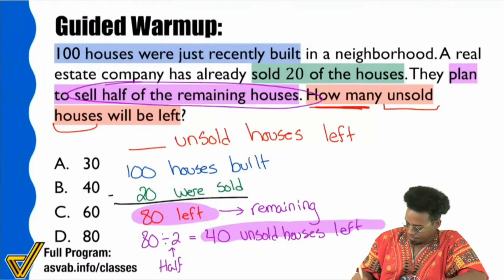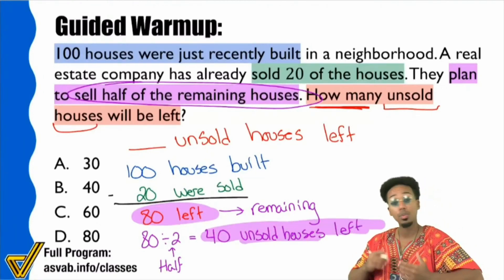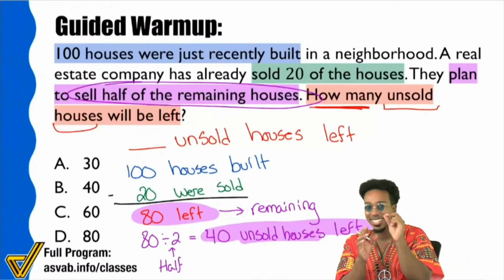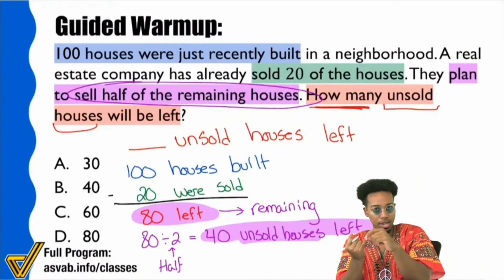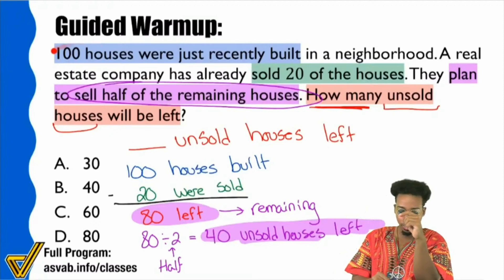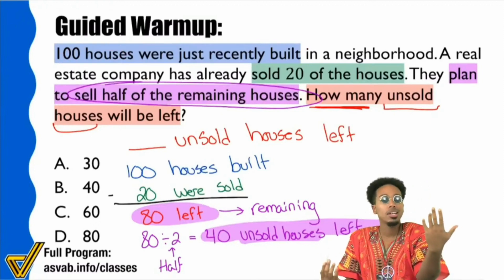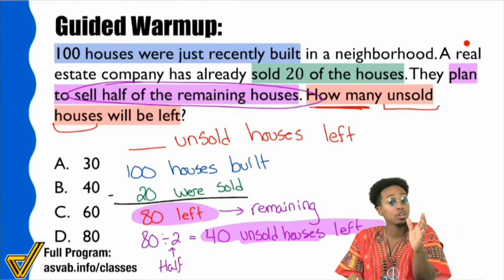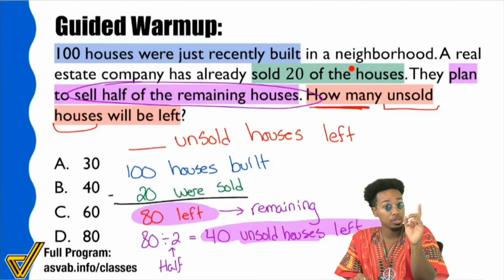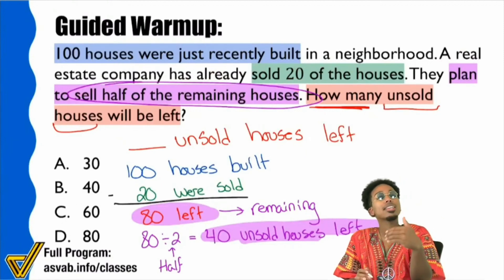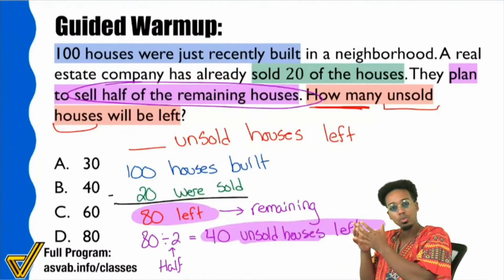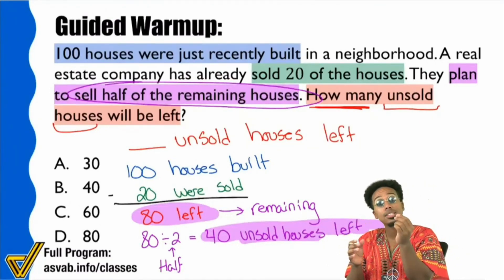Now we can be assured that we've completed the problem. We understood the question the entire way — we wanted to know how many houses are left. We almost ignored the 100 at first because it didn't talk about sold or unsold houses. It was only when they said they sold 20 of the houses, and of the ones left they'd sell half, that we told the story. Notice this wasn't a formula — it was simply reading the story and making a plan that fits the narrative.